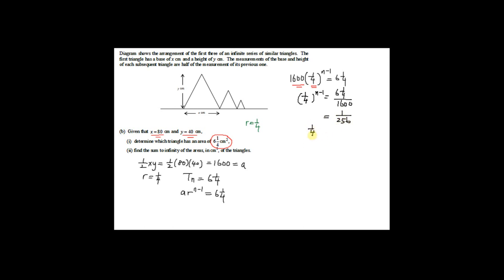Now you have (1/4)^(N−1) = 1/256. Since 4⁴ = 256, this means (1/4)^(N−1) = (1/4)⁴. With the same base, N−1 = 4, so N = 5. Therefore the fifth triangle has an area of 6¼ cm².